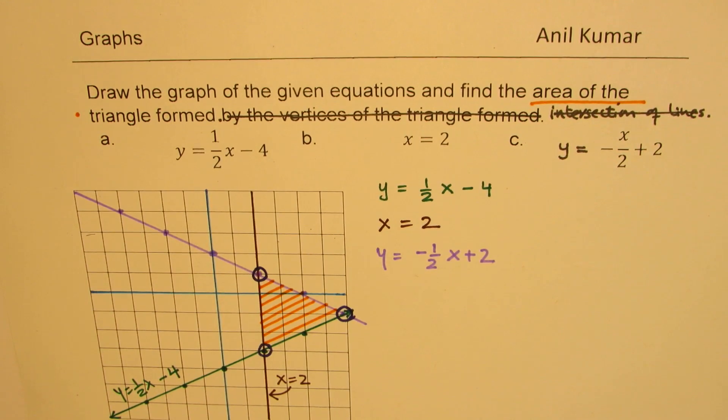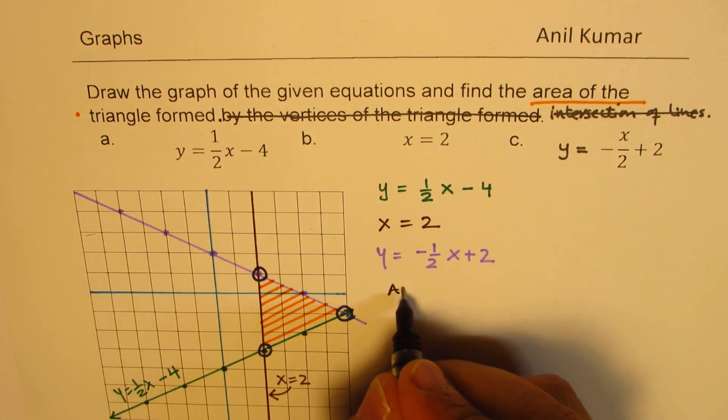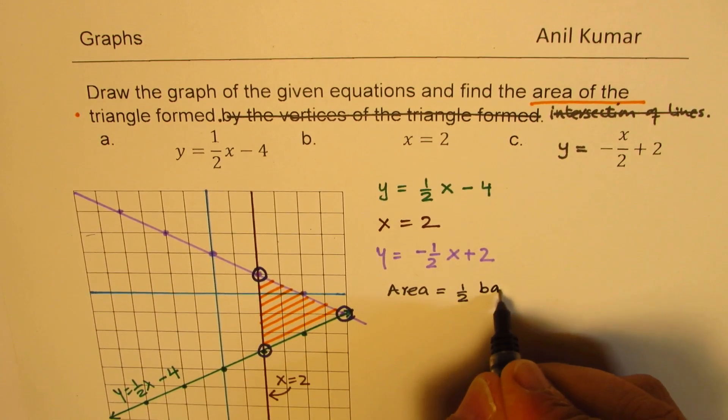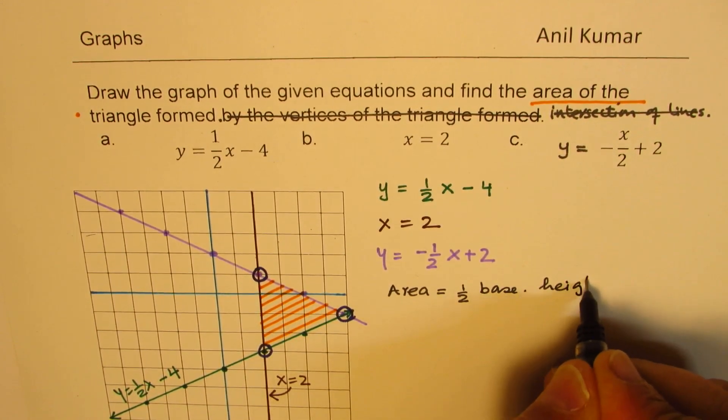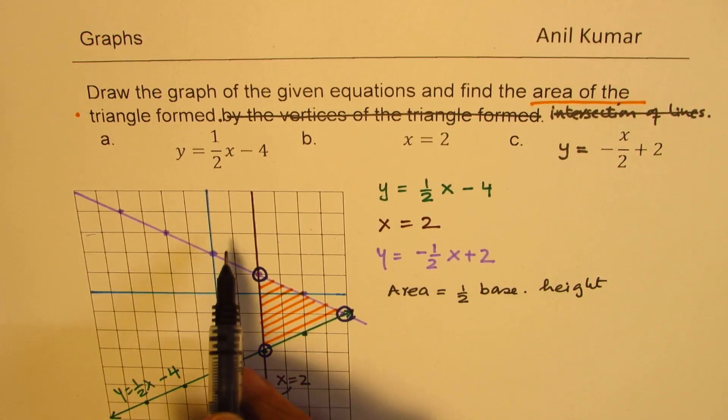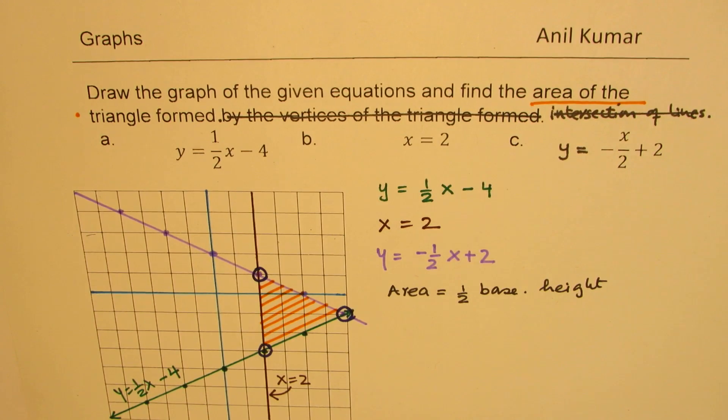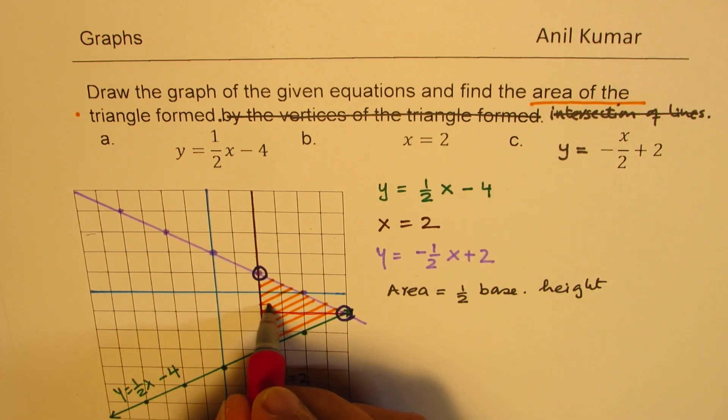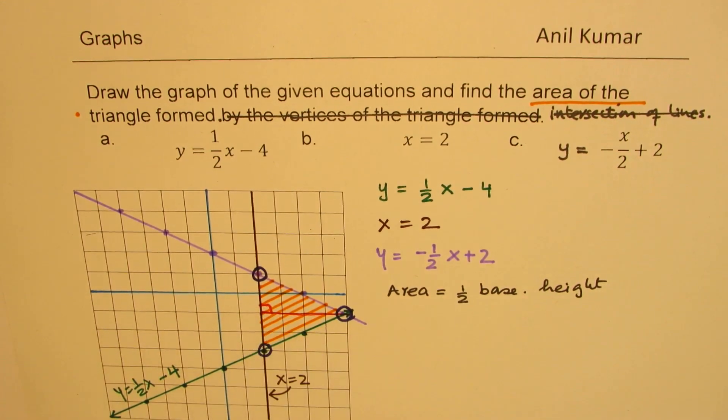So we've done the first part of sketching. Now, to find the area, we know area equals half base into height. In this particular case, since we have a vertical line, we can always say that base is this, and it's easy to calculate the height, which is this much. So that becomes perpendicular. So we can easily find both base and height.